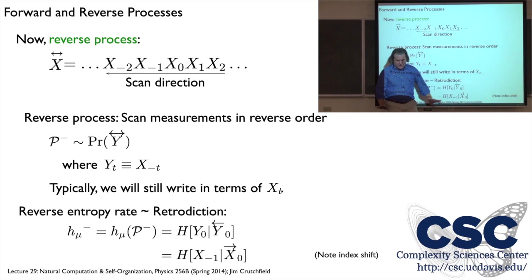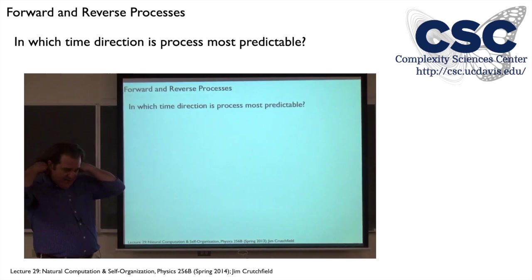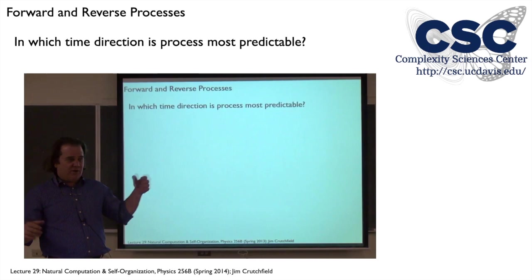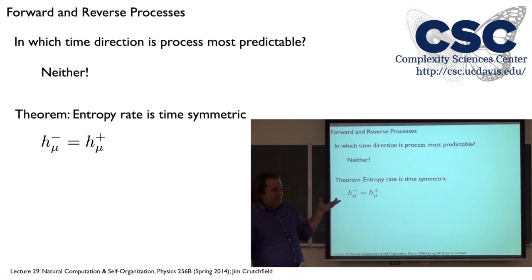There's just a little shift by 1 — a definitional thing in the index. If I have a process sitting in computer memory and I can choose to scan it whichever way I want, in which direction is a process more unpredictable — which would have the larger entropy rate? Neither. The forward and reverse entropy rates are the same, so whether I'm predicting or retrodicting, the average error or surprise is just h-mu.